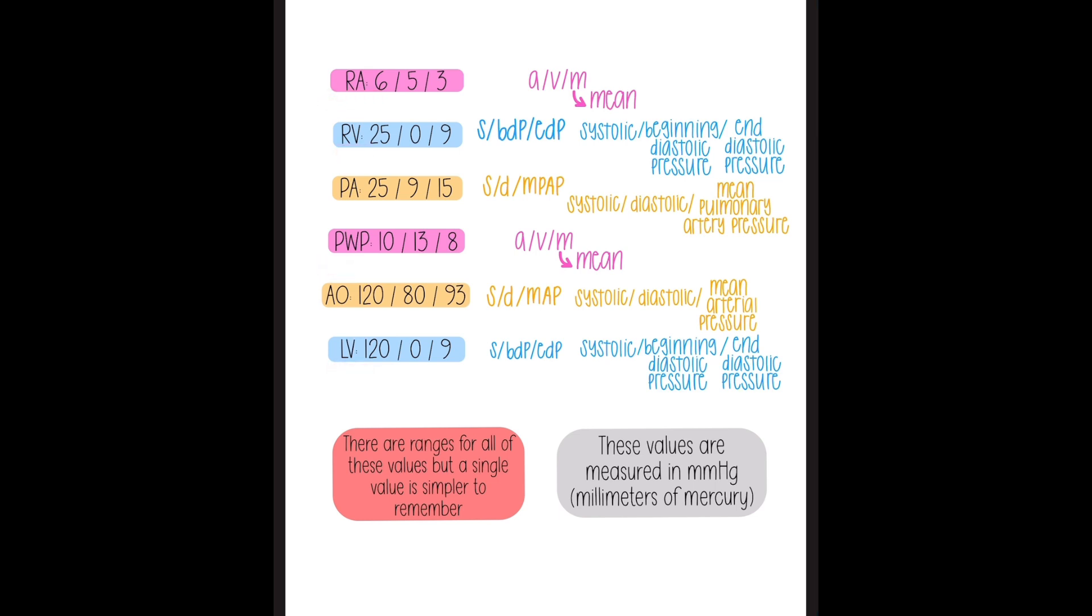So in order, I like to have the right-sided blood flow and then two left-sided pressures. So you have RA, right atrium, right ventricle, PA, pulmonary artery, pulmonary wedge pressure which is representative of left atrial pressure, AO, aortic pressure, and LV, left ventricular pressure.